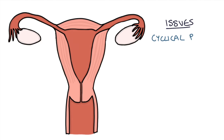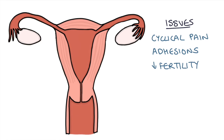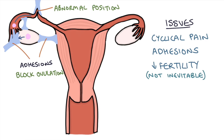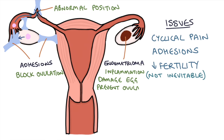Some women with endometriosis can struggle to become pregnant. However, it's important to remember that having endometriosis doesn't necessarily lead to reduced fertility. We're not really sure why some women struggle to get pregnant, but it could be due to adhesions around the ovaries and fallopian tubes that either block the ovary from releasing eggs or hold the tubes in abnormal positions, preventing the egg from moving along smoothly to the uterus. Endometriomas in the ovaries could also cause local inflammation and damage the eggs or prevent effective ovulation.